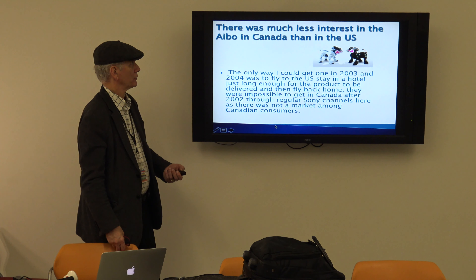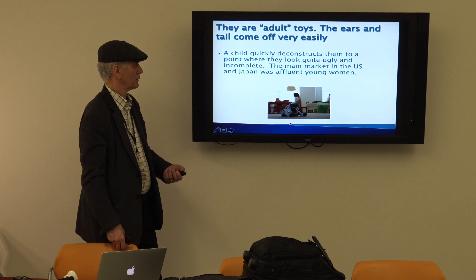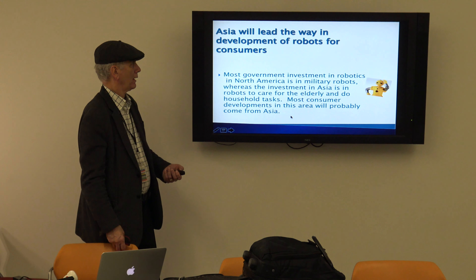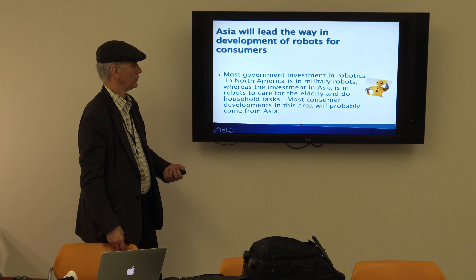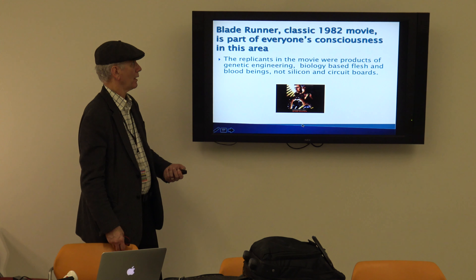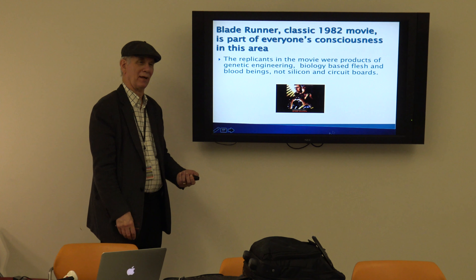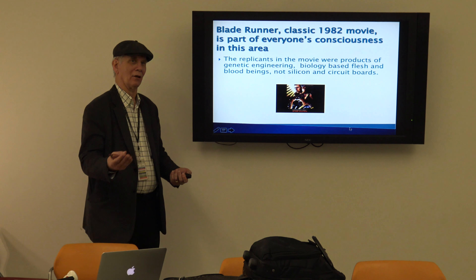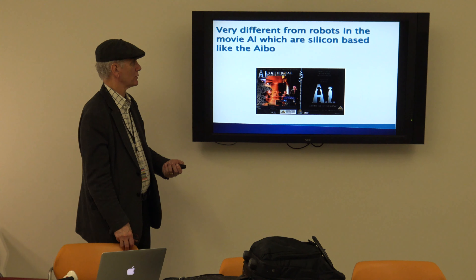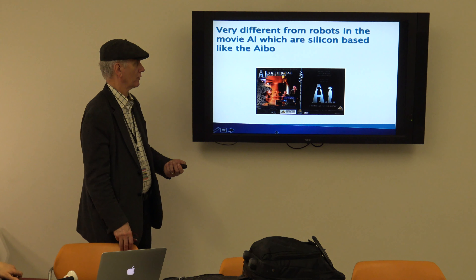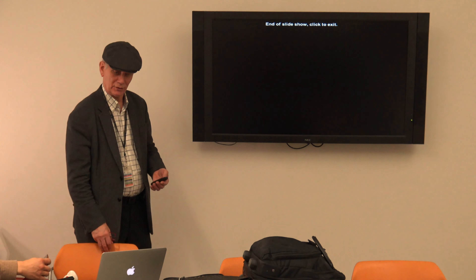As I mentioned, there's much less interest in him in Canada than in the U.S. — interest in this dog seems to be anti-Canadian. Most government investment in robotics in North America is military, whereas in Asia it's in elder care. Blade Runner, the classic 1982 movie, is not about robots like this, but about flesh-and-blood biological beings from genetic engineering. So even though it seems the same, it's different — whereas most other artificial intelligence theories are about this kind of thing.